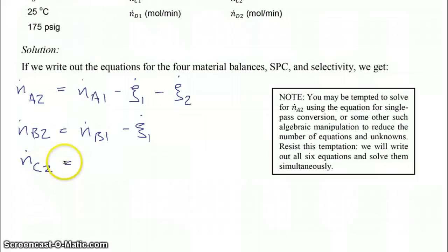For C coming out, equals C coming in plus the first extent of reaction minus the second, because it is made in the first reaction and degraded in the second. And then for our component D coming out, equals D going in plus the second extent of reaction. So those are our four material balances.